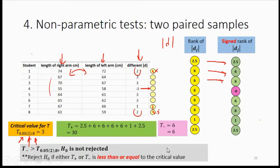What you need to do next is compare — take the smallest sum of the signed ranks, either positive or negative, and select the smallest one. If that smallest sum is smaller than the critical value, you reject the null hypothesis. In this case, this value is larger than the critical value, so the null hypothesis is not rejected. You have now learned how to read the critical T and compare it with the calculated value for both the non-parametric two independent sample test and the non-parametric paired sample test.